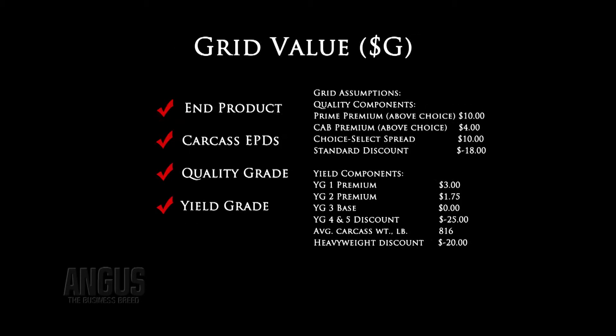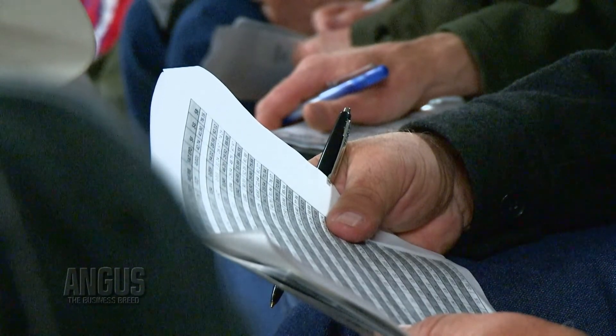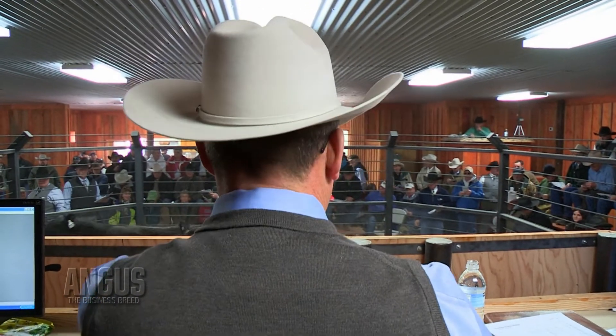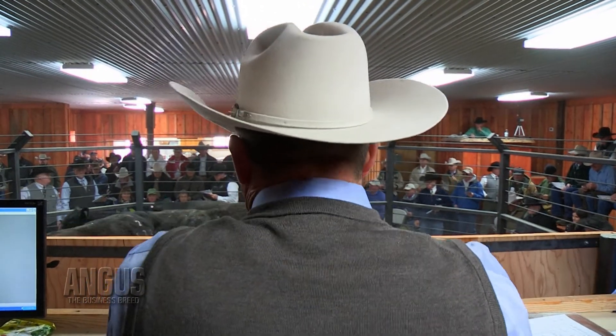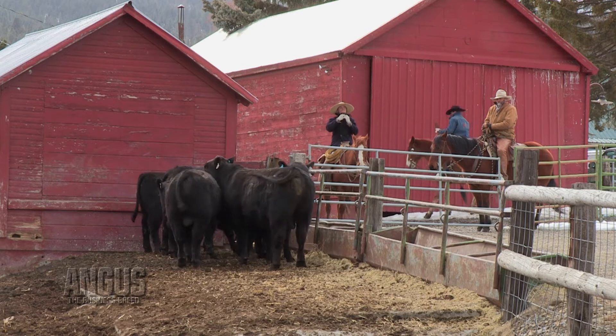On the other hand, dollar G, or the grid value index, takes into account the carcass traits and the values associated with yield grade and quality grade. One of the most commonly used indexes is dollar B, or the beef value index. This combines both dollar F — to take into account the performance traits and expenses at the feed yard level — as well as dollar G and the expenses and revenues related to traits at the carcass level, into one number known as dollar B.